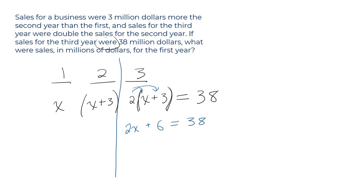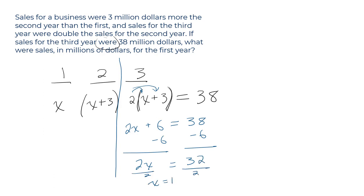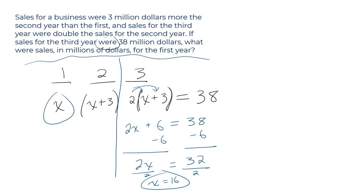I want my X's on one side and my numbers on the other side. So I'm going to subtract six from both sides so that the left-hand side is still equal to the right-hand side. So I've got 2X equals 32. I'll divide both sides by two. X equals 16. And is that the value they were asking for? Yes, it is. The question was: what were the sales in millions for the first year? So that is what they're asking for — X.